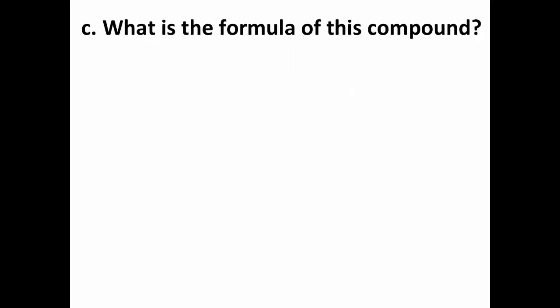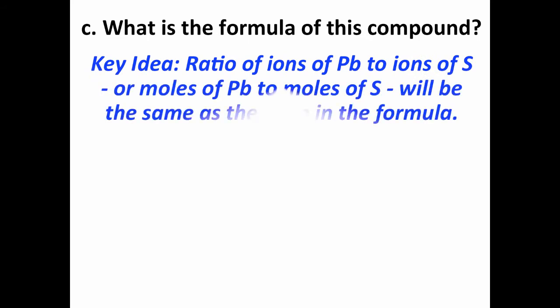Now you might notice something about the numbers we got for moles, and we're going to now try to find the formula of the compound. The key idea is that if we have a compound, the ratio of the particles that make it up is the same as the ratio of the moles of the substances that make up the compound, and that's going to give us the chemical formula. In this case we have lead and sulfur which are going to be ions—it's a metal with a nonmetal. So the ratio of ions of lead to ions of sulfur is going to be the same as the ratio of moles of lead to moles of sulfur, and that's the same as the ratio in the formula.